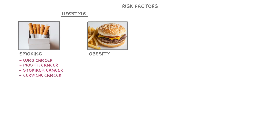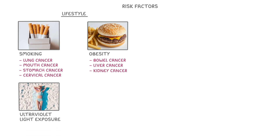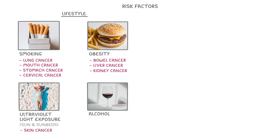Obesity has also been linked to multiple cancers, including bowel cancer, liver cancer and kidney cancer. Meanwhile, ultraviolet light exposure, which we get from both the sun and sunbeds, is strongly linked to skin cancer, because the UV radiation can damage our skin cells. Just like obesity, drinking alcohol is also linked to an increased risk of liver cancer.